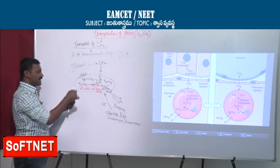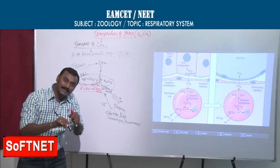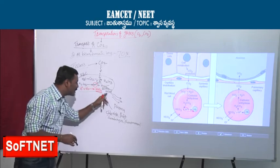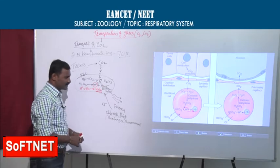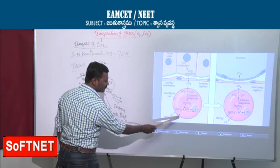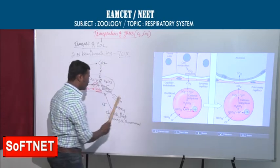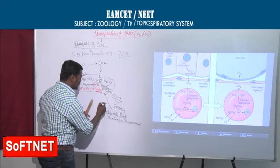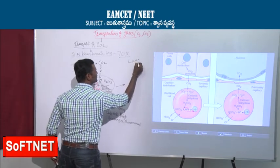So carbon dioxide entered the RBC as CO2, was converted to bicarbonate (HCO3⁻), and came out into plasma as HCO3⁻. This HCO3⁻ now travels back to the lungs, where the reverse reaction occurs.